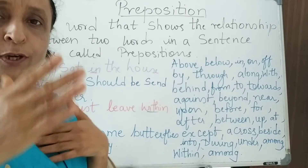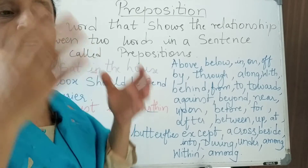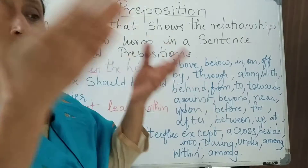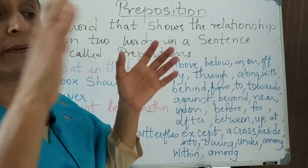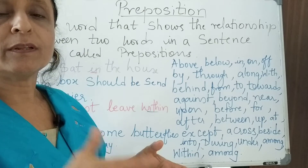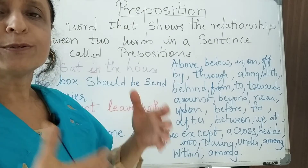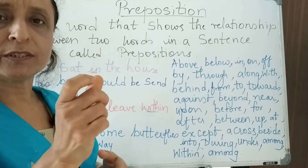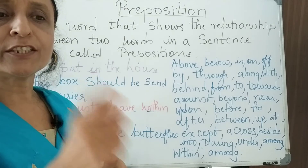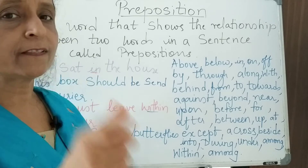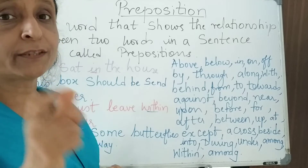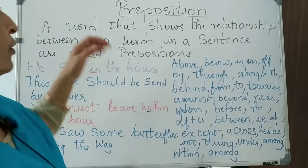So here — you are under the table, above the table, below the table. All those words, they show some relationship in the sentence. So that is preposition.